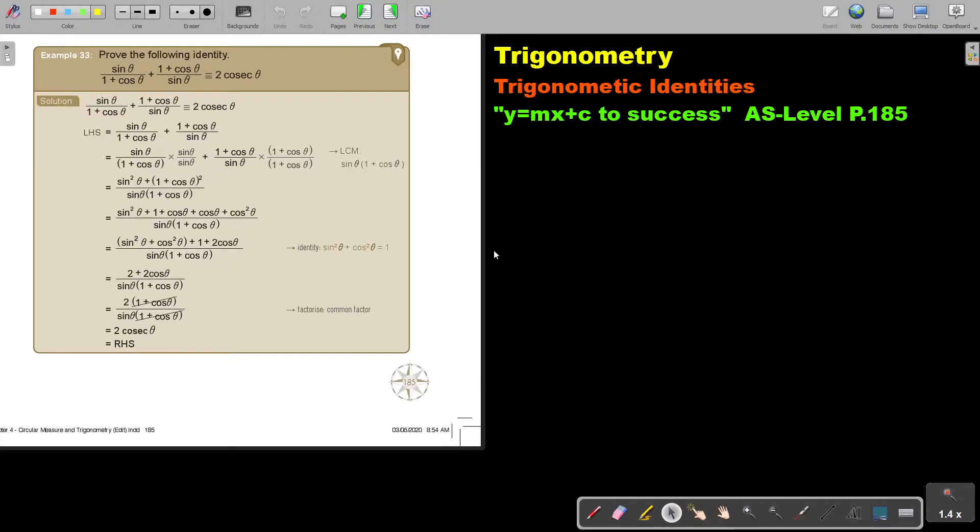In this video, we will continue with trigonometric identities. You will find this on page 185 in the Namibia AS level mathematics textbook Y equals MX plus C to success.